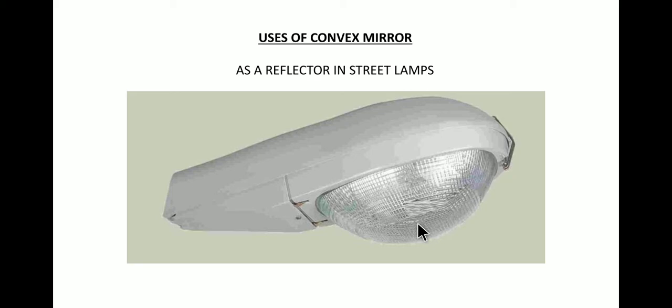So the polished metallic surface of the reflector is used in street lamps so that it diverges the light and it covers the larger area on the street so the light can be used more effectively.